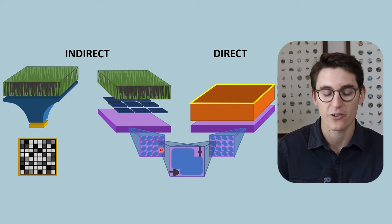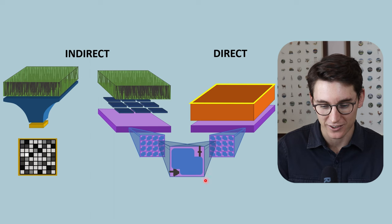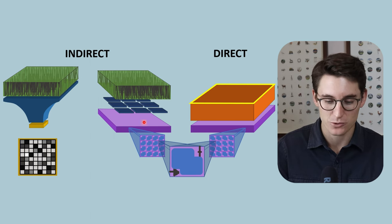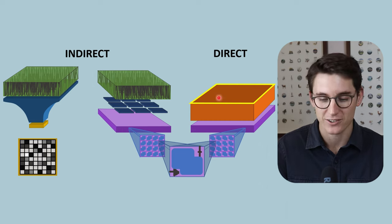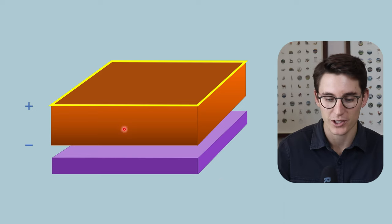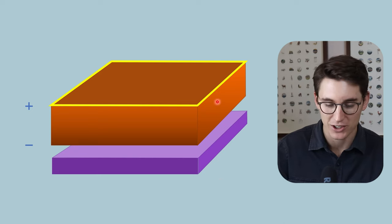And you can see from this diagram here, it shares a common detector element, a DEL. The same DEL that is used in our indirect thin film transistor array is used in our direct thin film transistor array. Now the difference here is that we use what is known as an amorphous selenium layer, and this is a semiconductor.